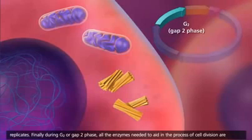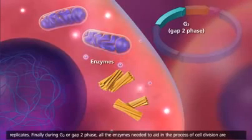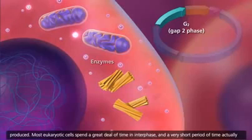Finally, during G2 or GAP2 phase, all the enzymes needed to aid in the process of cell division are produced.